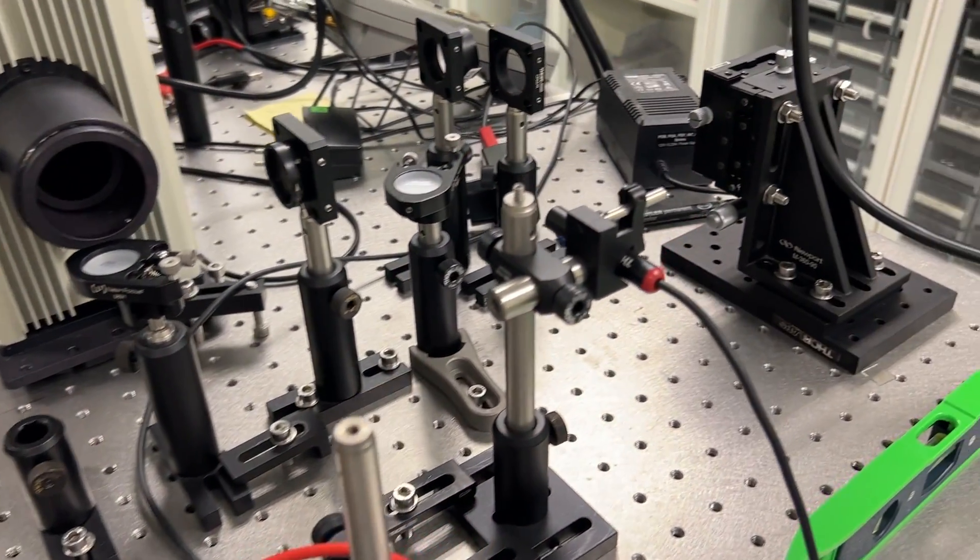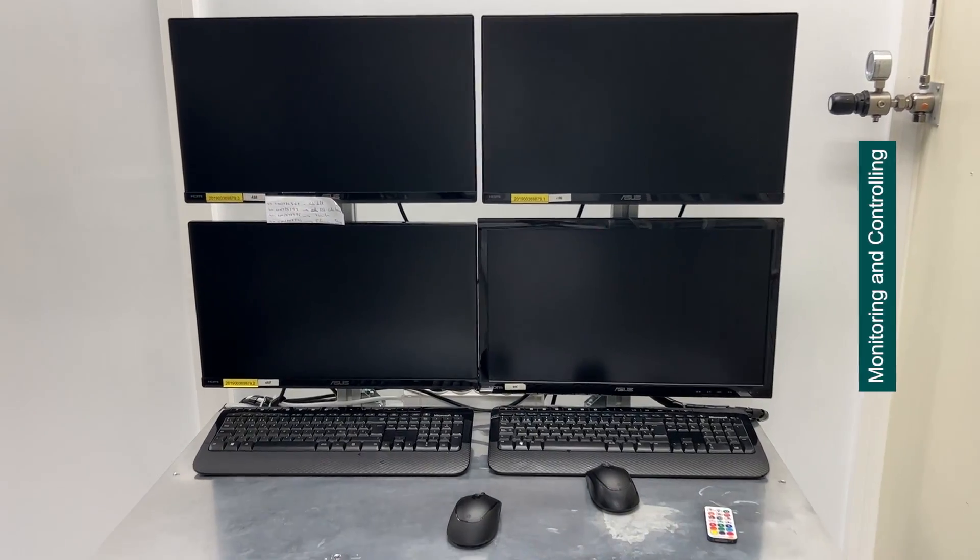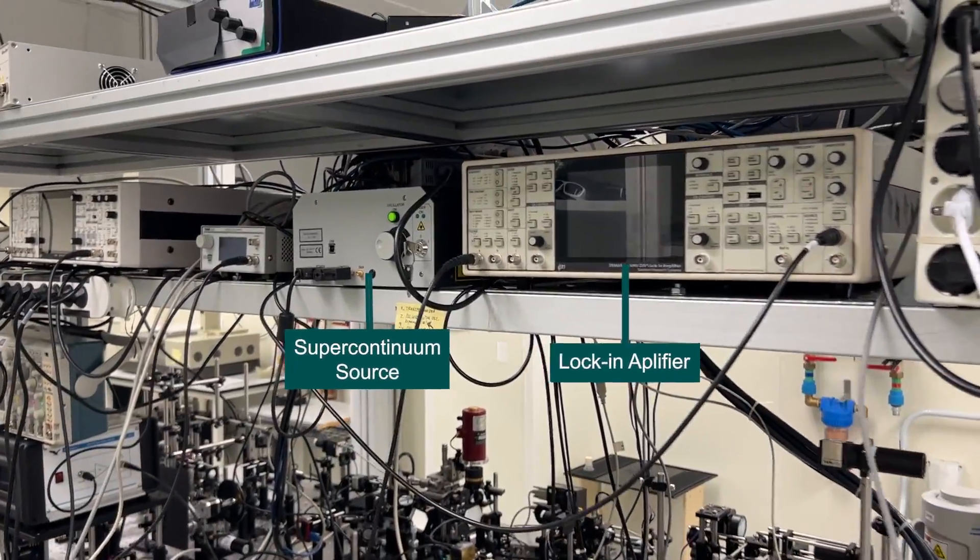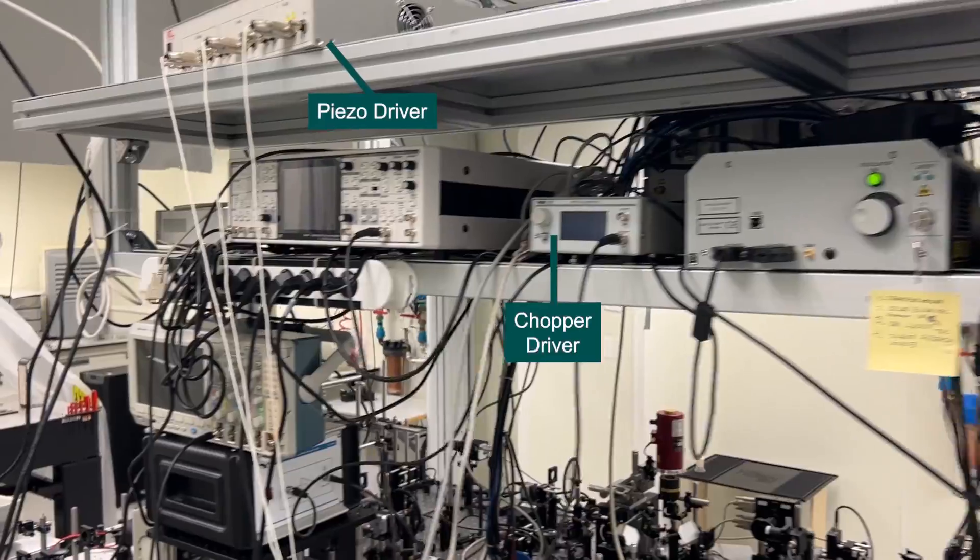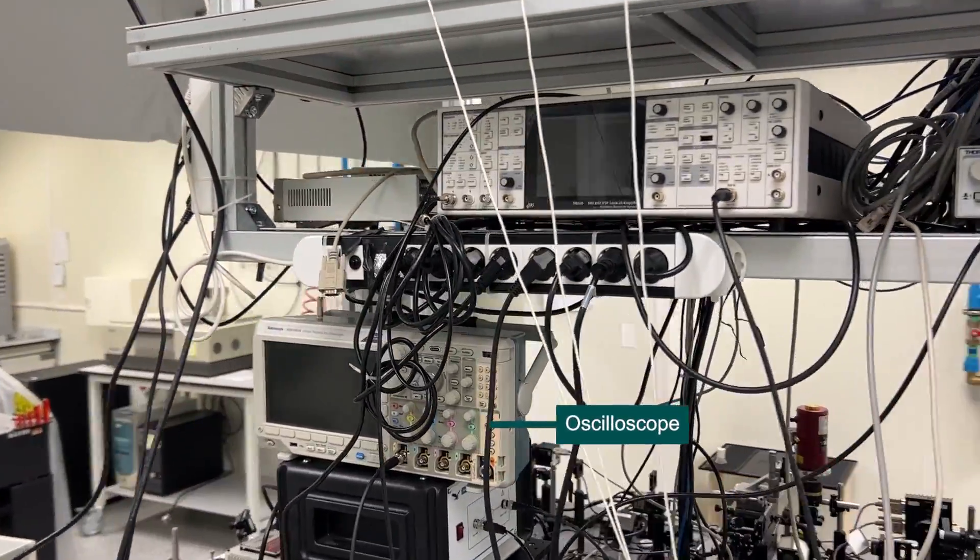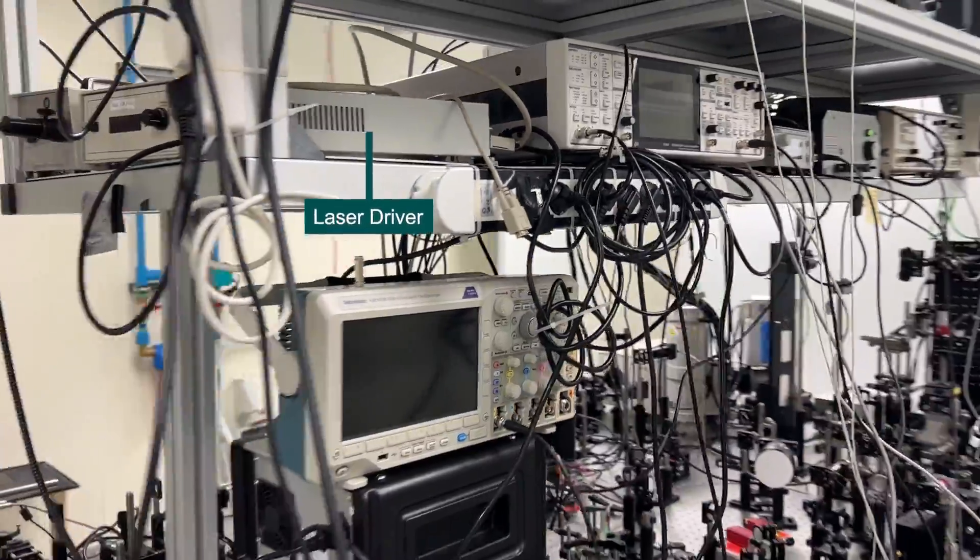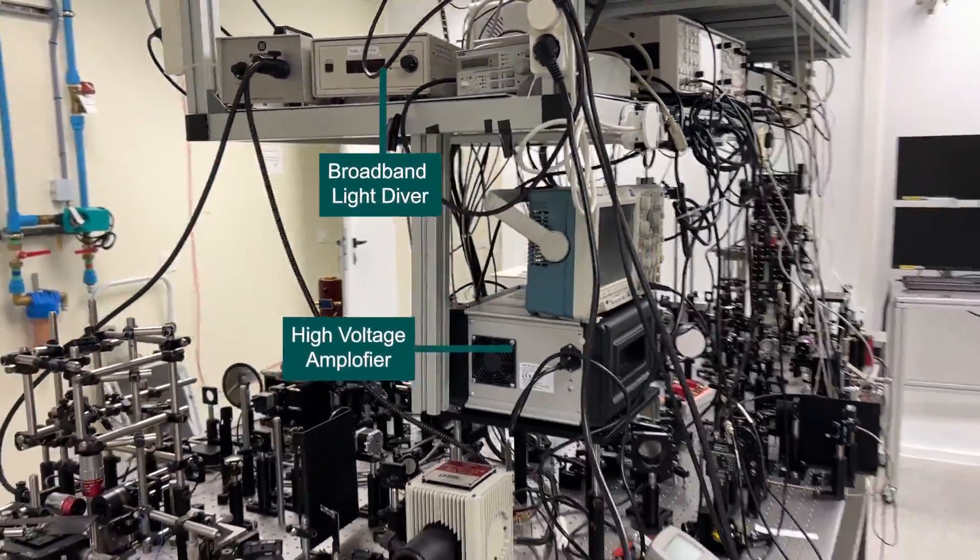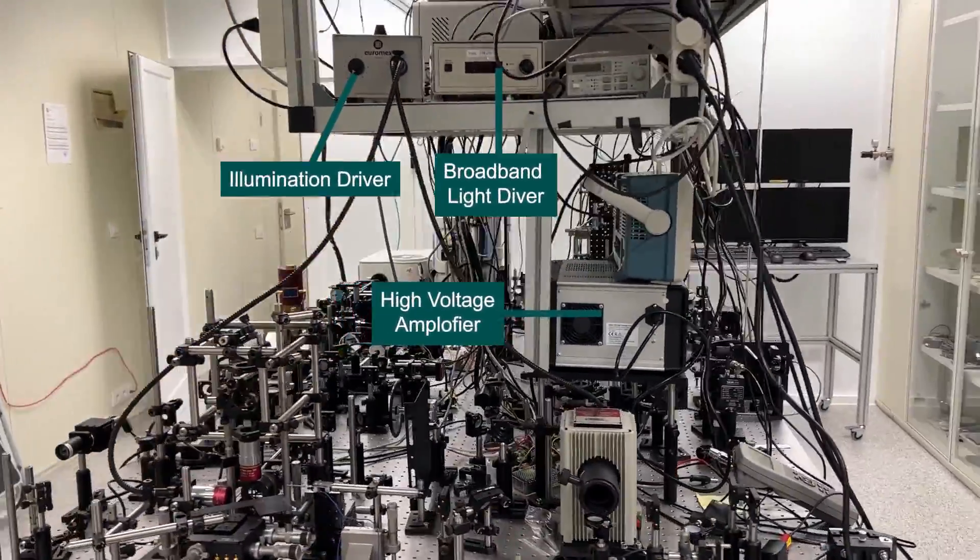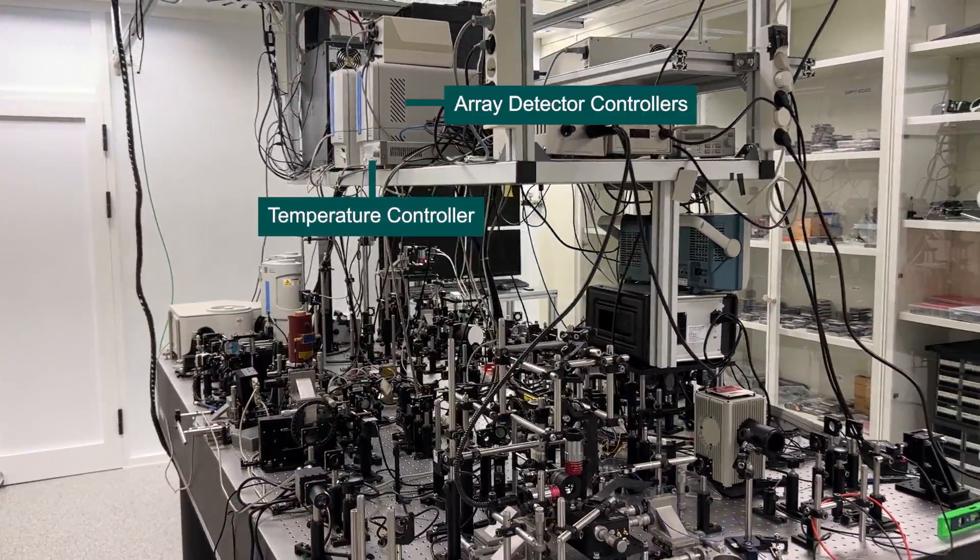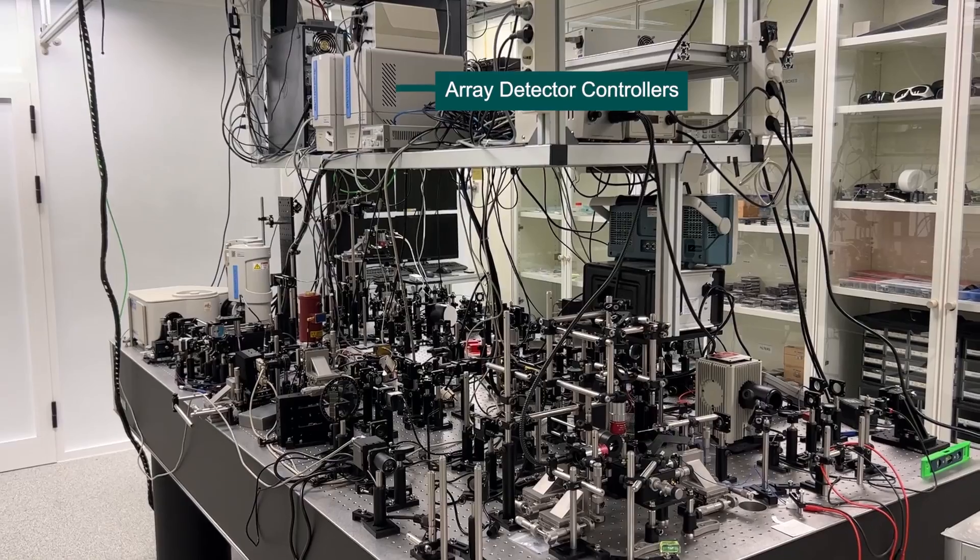And now let's take a look at the connected devices to the optical table. Computer screens, lock-in amplifier for isolating the desired modulating signal, light drivers and controllers, oscilloscope for acquiring time domain signals, other light drivers and signal conditioners. One important device, the temperature controller. And behind, the array detector controllers and the computer.